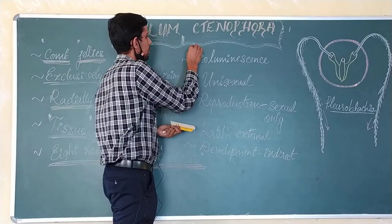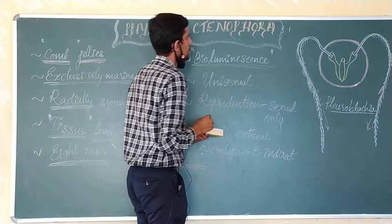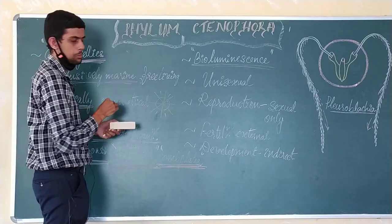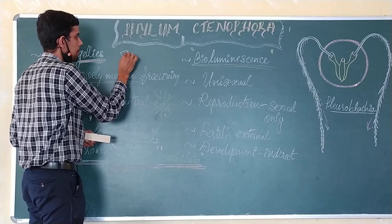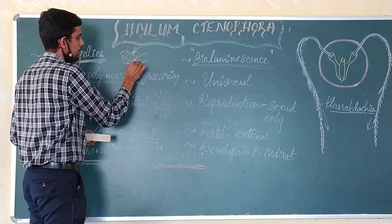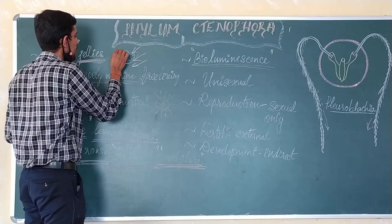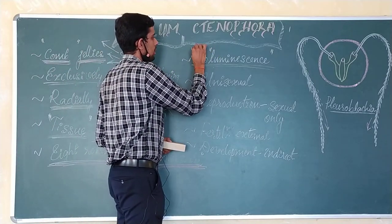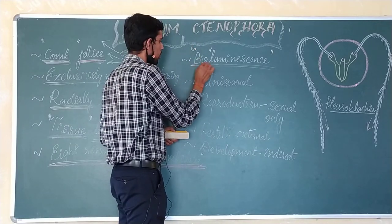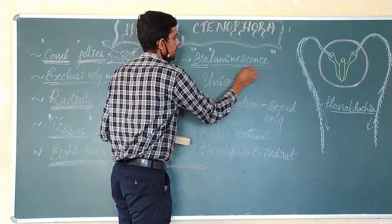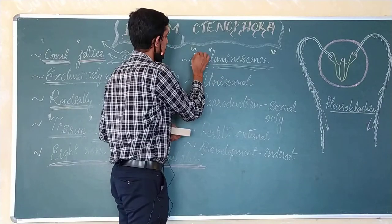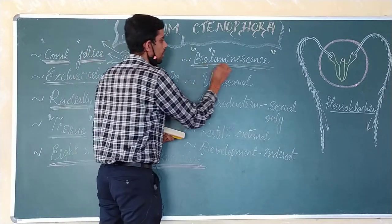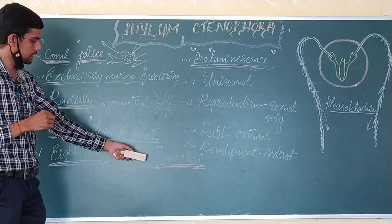Another exclusive feature observed in Tenophora is bioluminescence — the emission of light by living organisms. The term 'bio' refers to living, and 'luminescence' refers to the production of light. This is another typical character of the phylum Tenophora: bioluminescence and the presence of eight rows of ciliated comb plates are the key features to mention when writing important characteristics of this phylum.